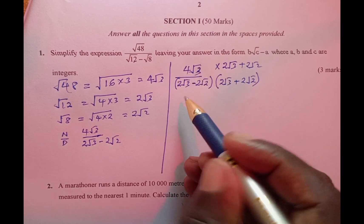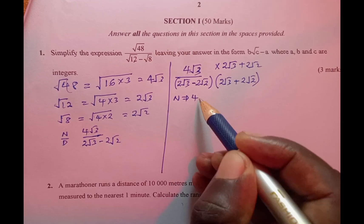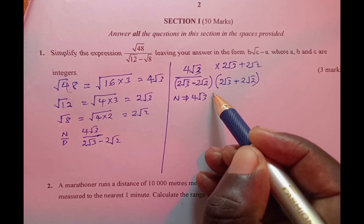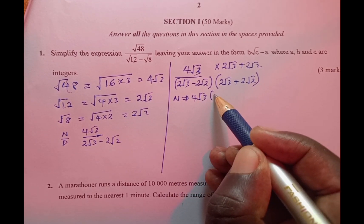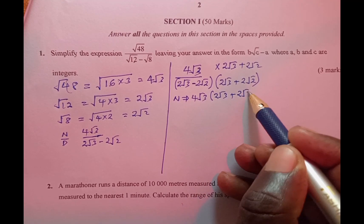After that, now we can simplify the numerator. We have 4√3 multiplied by 2√3 plus 2√2.